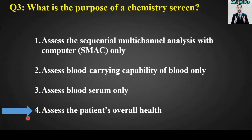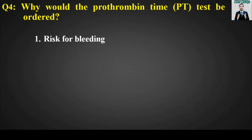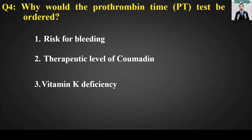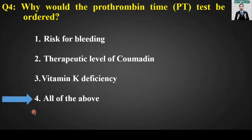MCQ number four: Why would the prothrombin time (PT) test be ordered? Options: risk for bleeding; therapeutic level of Coumadin; vitamin K deficiency; all of the above. The right answer is option number four — all of the above.